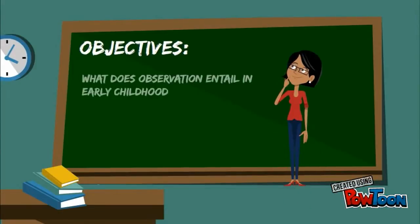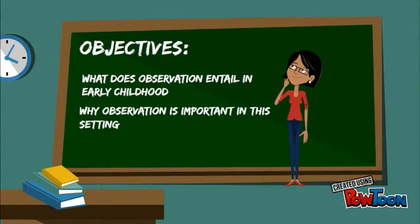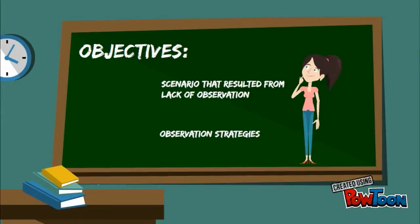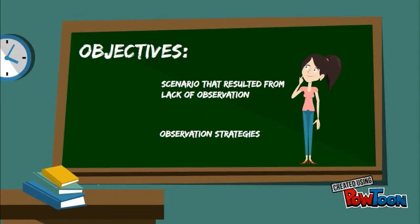At the end of this video you will have a better understanding of observation and reflection in early childhood education, and will be able to confidently answer the following questions: what does observation entail in early childhood education, why is observation important in this setting, and what roles do practitioners play as it relates to observation? We will also look at a scenario that resulted from lack of observation and give solutions to the problem. Finally, we will analyze three observation techniques used during our practicum experience that help with observation of children, classroom environment, and parent-teacher interactions.